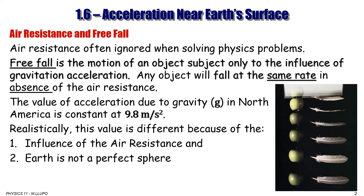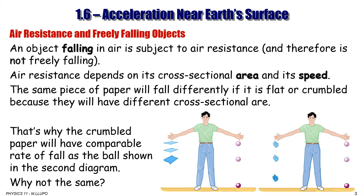We'll talk about this a little bit later. An object falling in air is subject to air resistance and therefore is not in free fall. Air resistance depends on the object's cross-sectional area and its speed. The same piece of paper will fall differently if it is flat or crumbled because they have different cross-sectional areas.